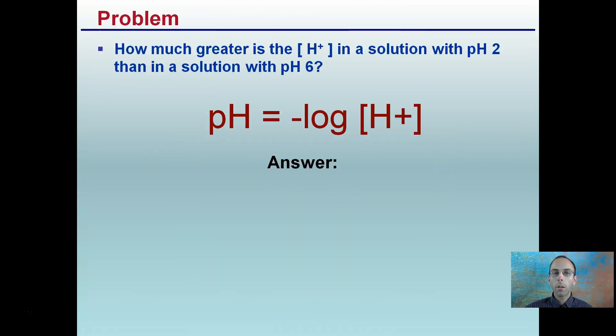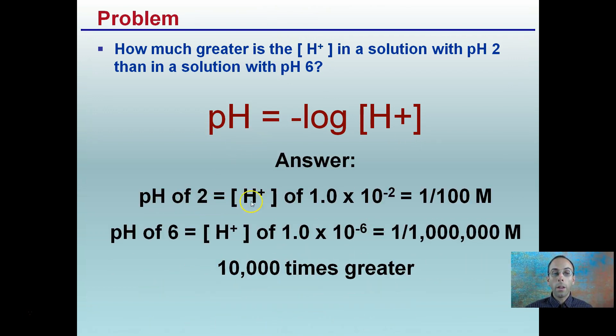Now, developing a problem here. How much greater is the hydrogen ion concentration in a solution with pH 2 than a solution with pH 6? So the answer here is a pH of 2 has a hydrogen ion concentration of 1 one-hundredth molar. pH of 6, hydrogen ion concentration of 1 times 10 to the minus 6, a much smaller number, 1 one-millionth. By using the log function, you'll need a calculator to do this. We have 10 to the minus 2 - that's what the 2 is indicating. The 6 is to the minus 6. And we can see that the difference between these two numbers is 10,000 times greater.